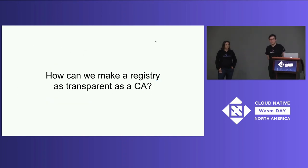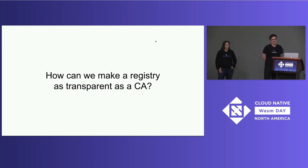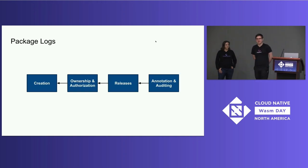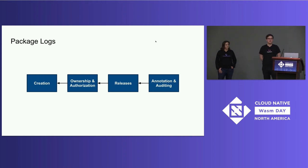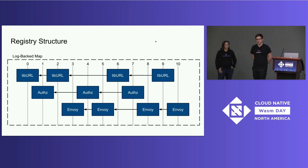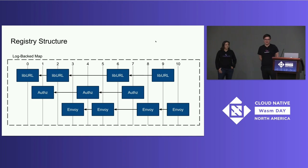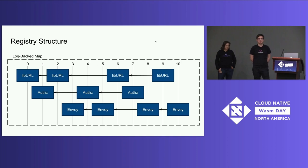So now the question is: how can we make a registry that's as transparent as a CA and achieve package transparency, as we're calling it? The first thing is that we make the state of every package a log with events that cover things from the initial creation of that package to adding and removing maintainers, releasing and unreleasing different versions of the package, and potentially annotating the log with other information and auditing data. Then what we do is combine all of the logs for each individual package into an overall log-backed map, where at any given point in time the state of the map is the head entry of every package log — it's like an index into all of these little logs, and the backing log actually stores a reference to every entry for every package.